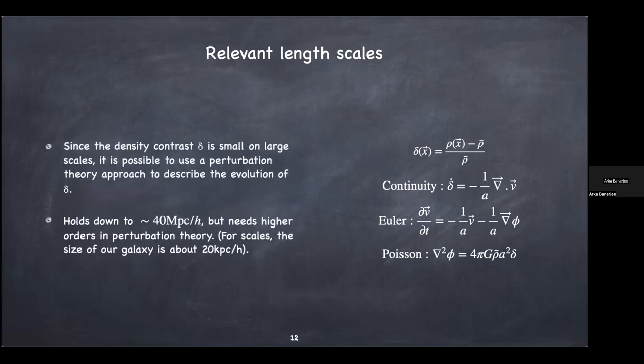You can do this and determine how the small structures seen in the CMB should look today. However, this formalism will break down because gravity will drive delta to become larger and larger, to a point where you can no longer do linear perturbation theory. You can do higher-order perturbation theory — there's a framework called the effective field theory of large-scale structure which people are working on today, trying to extend this framework down to smaller scales.